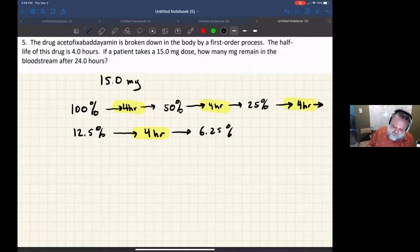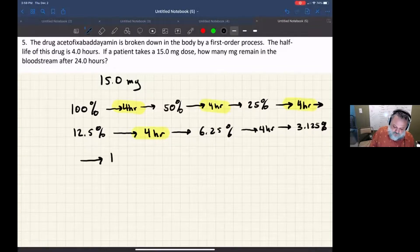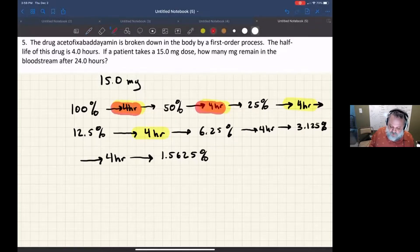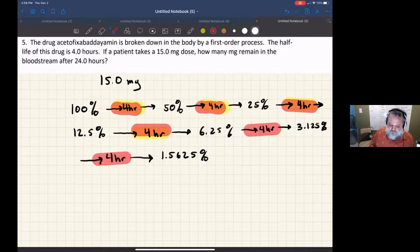And so what do I get next? Another four hours would be 3.125%, and then the last four hours, so now we're up to 24 hours, it'd be half of that, it would be 1.5625% of the original concentration. Again, we've got 4, 8, 12, 16, 20, 24 hours.